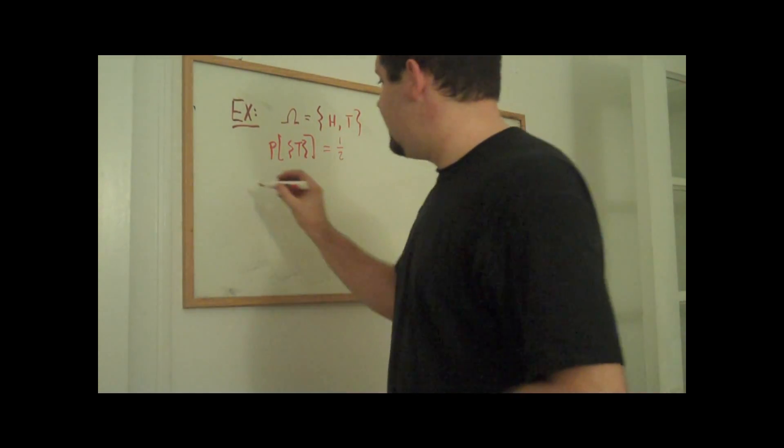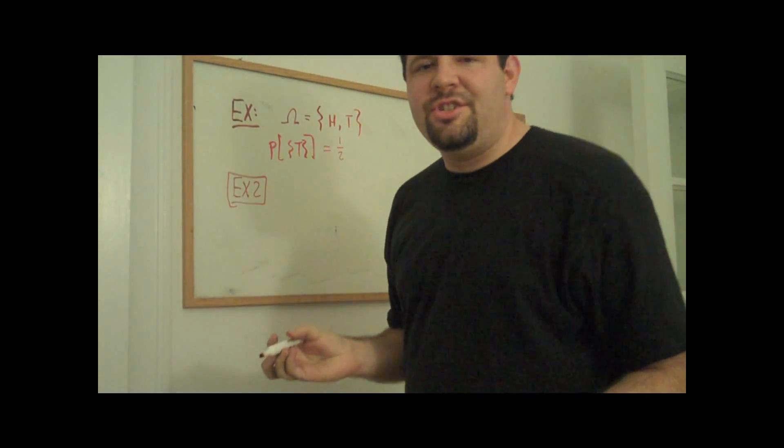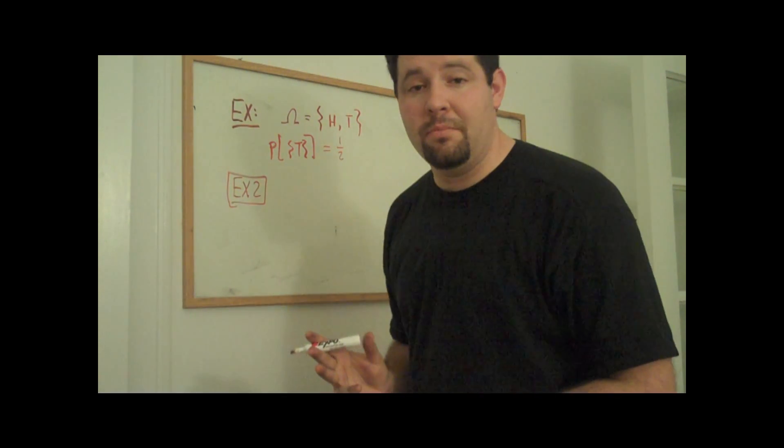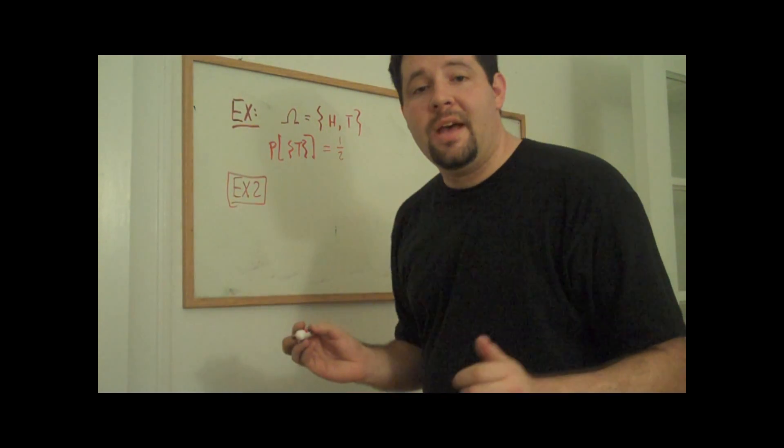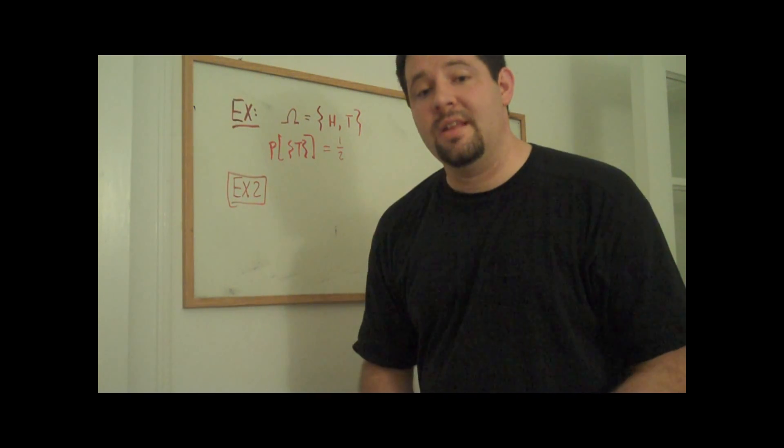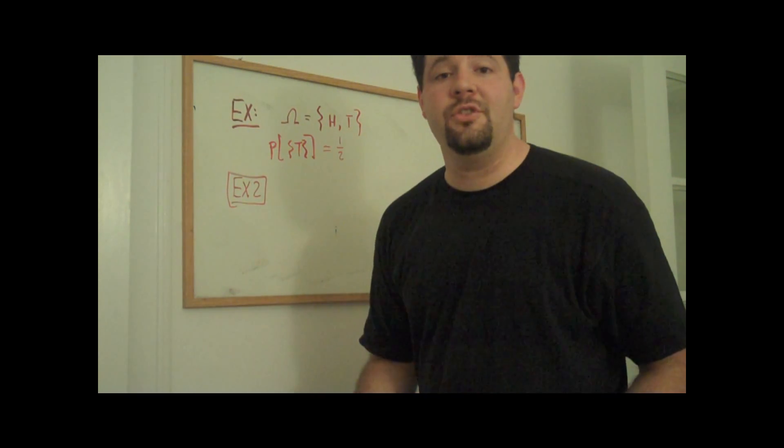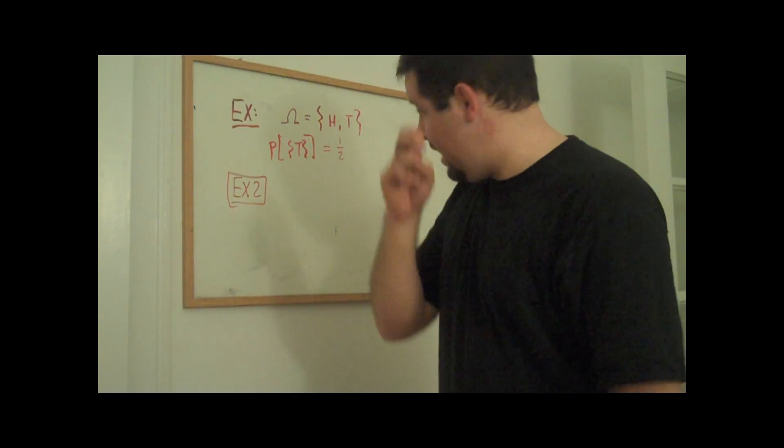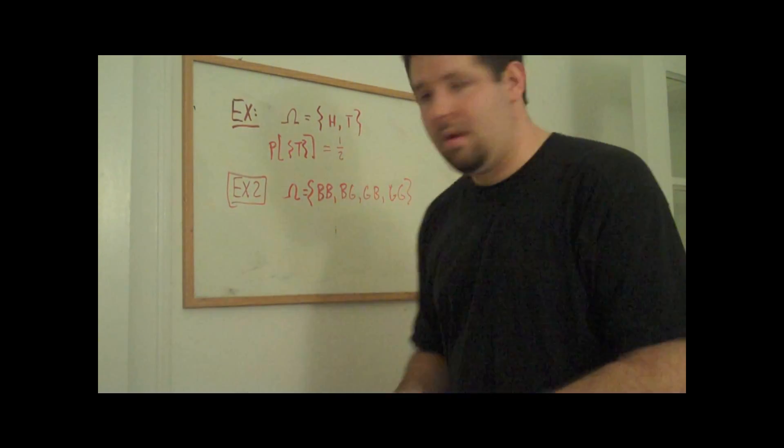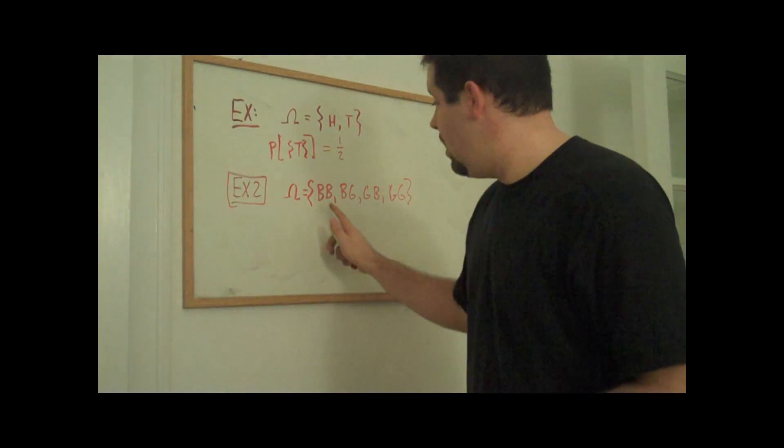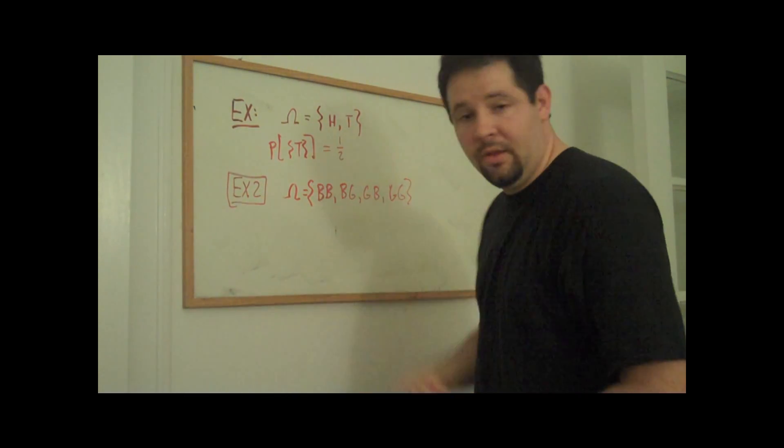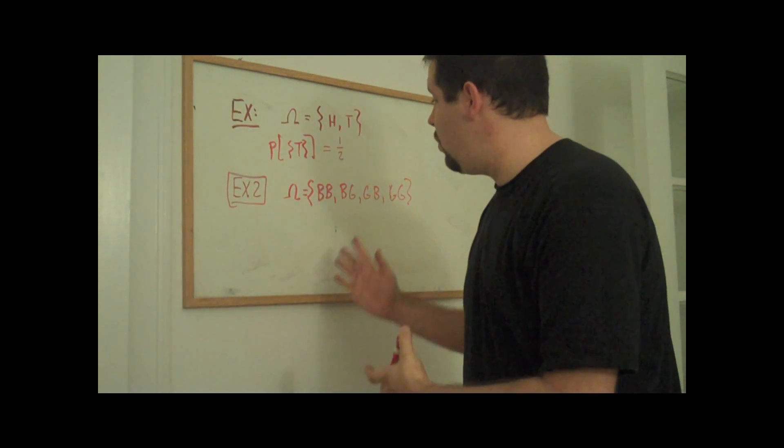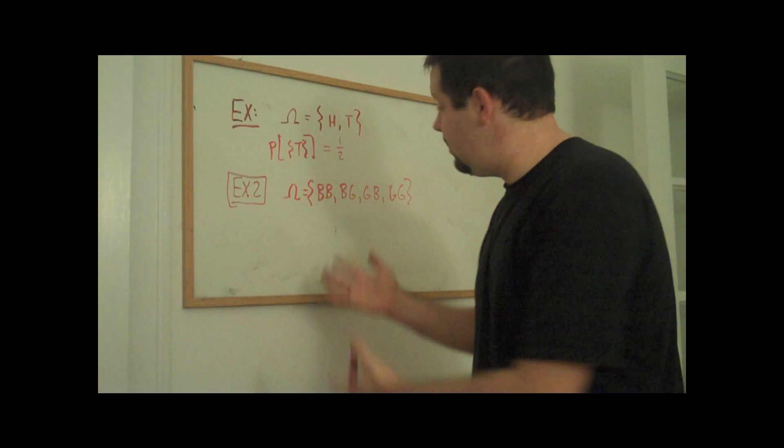Let's do a second example. This example is just to get a better sense for how these sample spaces work and how to define probabilities. Now let's imagine that the experiment is that a couple has two children and we observe the gender of each of the children and the order in which this happens. Well it would have four elements. It would have a boy and then a boy, a boy and then a girl, a girl and then a boy and then two girls. We would think that each one of these would be equally likely.